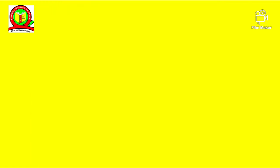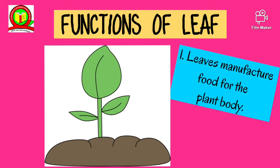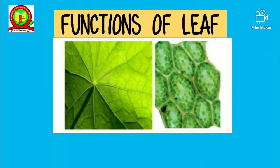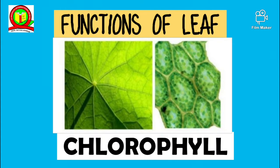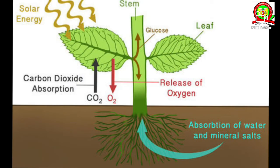What are the functions of a leaf? We all know that the main function of leaf is to make food. Hence, it is called the kitchen of the plant. The leaves are green because they have a green pigment called chlorophyll. The chlorophyll traps the sunlight and the plant produces food, which is glucose, using carbon dioxide, water and the trapped energy of the sunlight. This process of making food, i.e. glucose, is called photosynthesis.